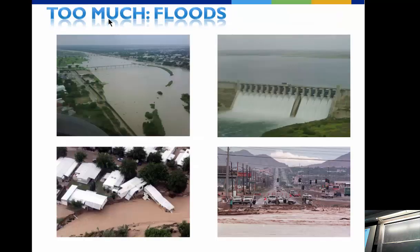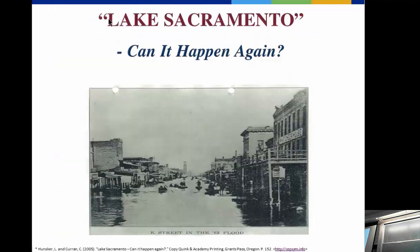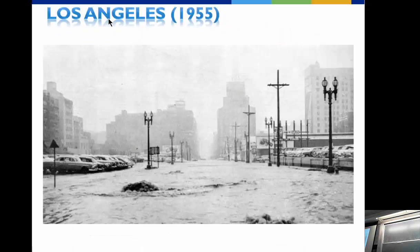Looking at historical floods in California: the largest flood event here was in 1861–1862. Imagine the entire central valley — 60 miles wide, 200 miles long — flooded for two or three months under about five feet of water. It was extremely severe. The Governor's Mansion in Sacramento was actually raised one level because Sacramento flooded time and time again.